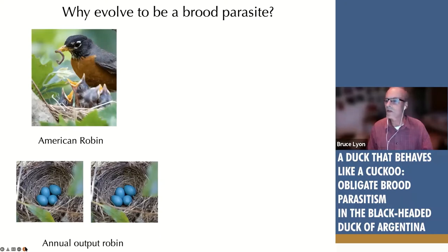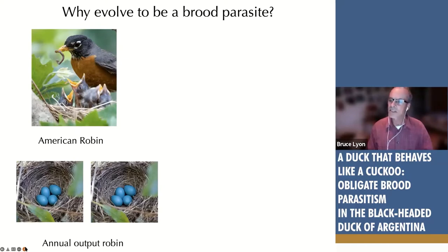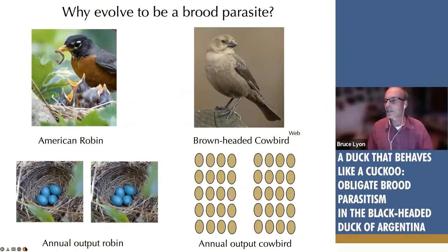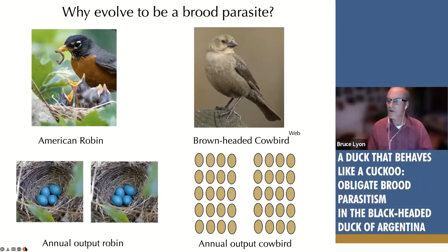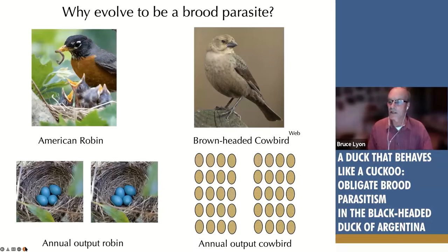Natural selection favors birds that can raise as many chicks as possible. The typical annual output for an American robin might be eight babies. But a cowbird can lay up to 40 or even 60 eggs in a season. Eggs are cheap for altricial birds — babies are expensive. If a cowbird can get somebody else to raise those eggs, she could have an incredible increase in realized fecundity. John Eadie and I speculated that these fecundity boosts may explain why brood parasitism evolved and diversified more in altricial taxa than precocial bird taxa.